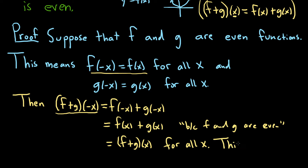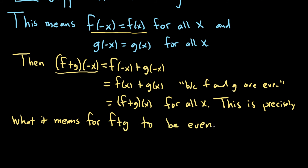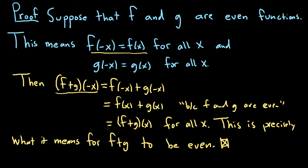This is precisely what it means for f plus g to be an even function. And that, my friends, completes the proof. We started with two functions f and g that were even, wrote down what it meant for them to be even, looked at the sum of those functions, used the definition of the sum, and used the fact that the functions are even. It's true for all x, therefore f plus g is an even function.